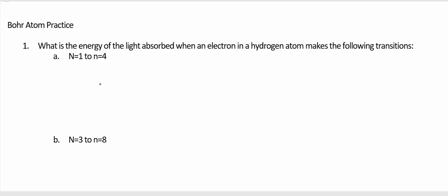Bohr atom practice. What is the energy of the light absorbed when an electron in a hydrogen atom makes the following transitions from n equals 1 to n equals 4?